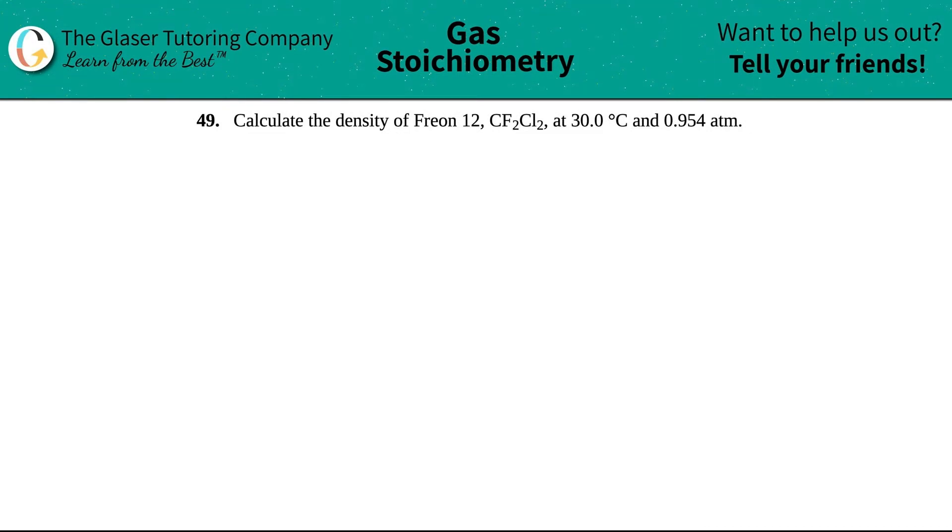Number 49. Calculate the density of Freon 12, which is CF2Cl2, at 30.0 degrees Celsius and 0.954 atm.